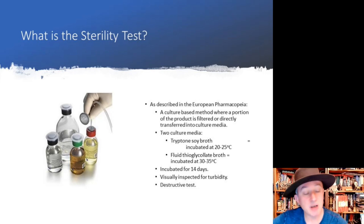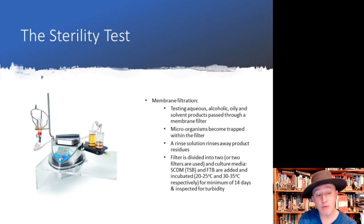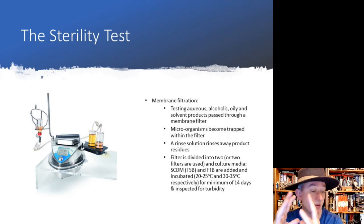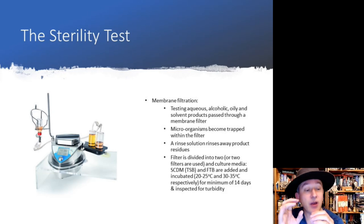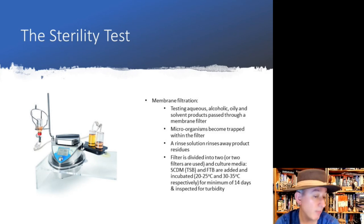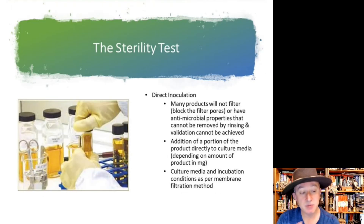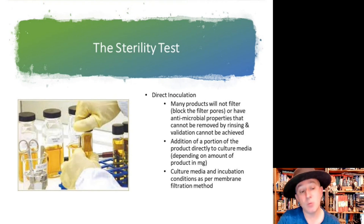If you can see visible turbidity, it is a failure — you have a non-sterile product. It is also a destructive test because you are taking items from the batch. The direct inoculation test is simpler, transferring a portion of product into media, but it is not the method of choice. Freeze-dried products, however, often need to go through the direct inoculation test.